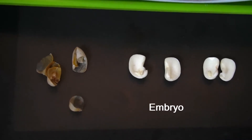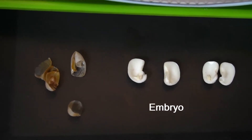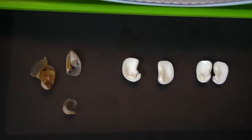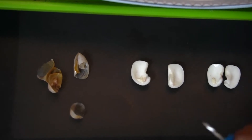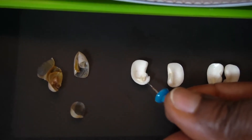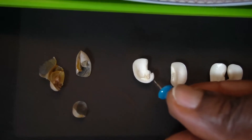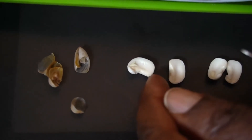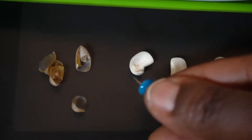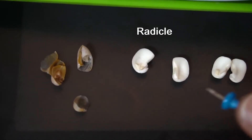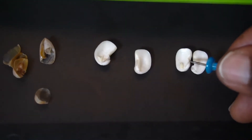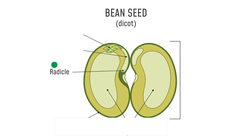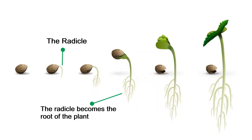The baby plant is actually called the embryo. It has two parts. This part of the baby plant, or the embryo, is called the radicle. The radicle will become the root of the plant.